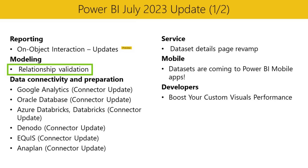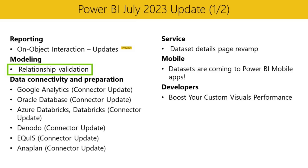Moving on to modeling, we've added relationship validation to the data model editing in the service to mimic the functionality in Power BI Desktop. When you define the properties of your relationship, the system will automatically validate it and offer appropriate choices for cardinality and cross-filter selections.